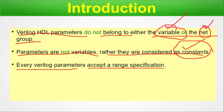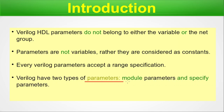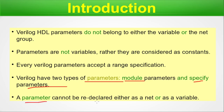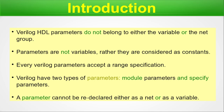Every Verilog parameter accepts a range specification — a parameter can begin from a range and end at a range with multiple values in between, and this range specification is present from the declaration. Verilog has two major types of parameters: module parameters and specify parameters, which we will cover in detail. A parameter cannot be redeclared as a net or as a variable; once declared as a parameter, that text string cannot be redeclared as a net or variable.